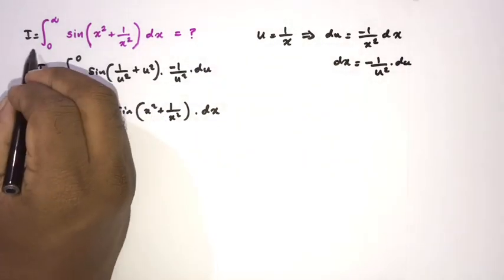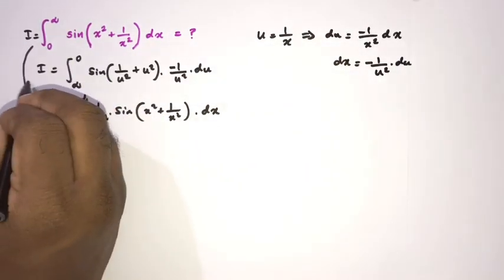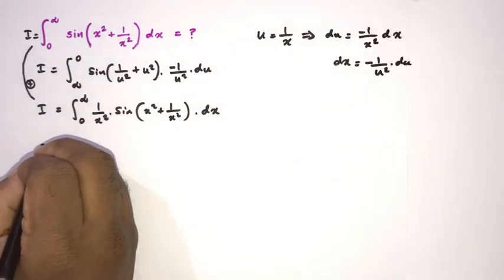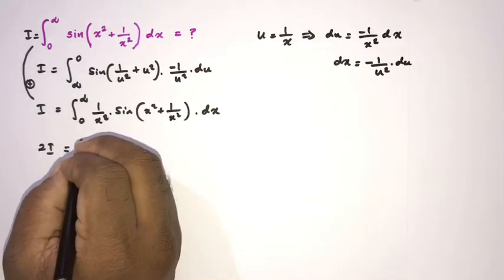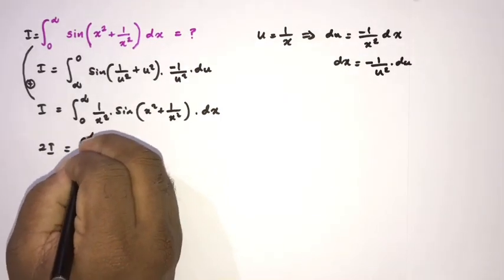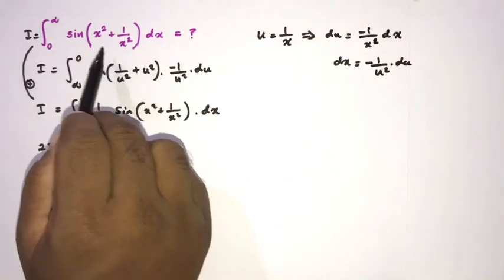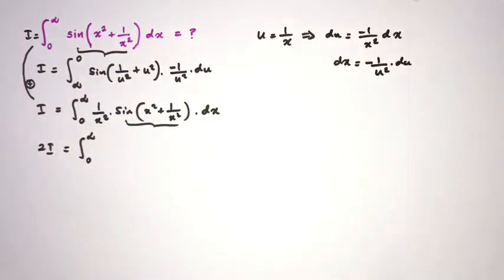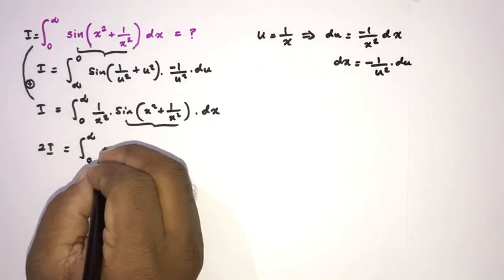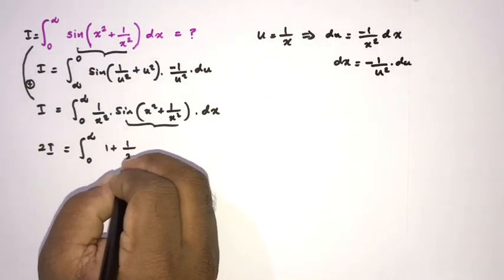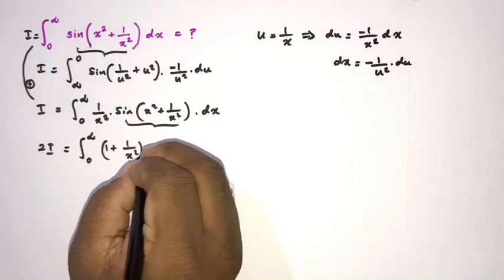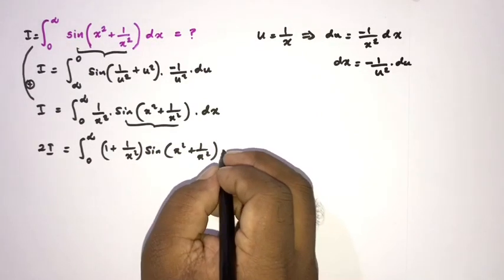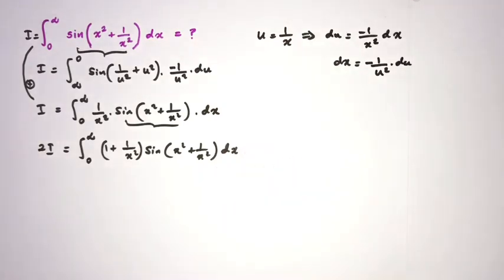Adding the two expressions for I, we get 2I = integral from 0 to infinity of (1 + 1/x²) · sine of (x² + 1/x²) dx.